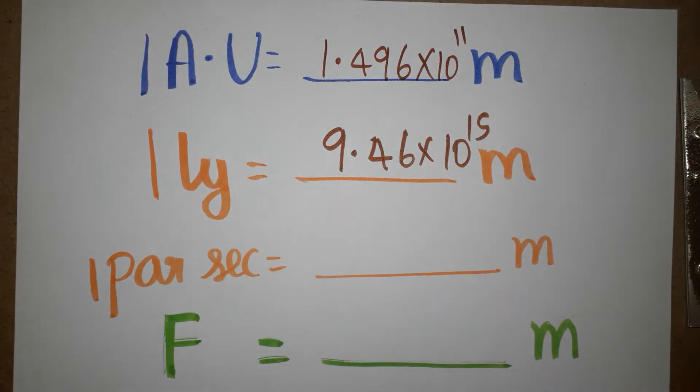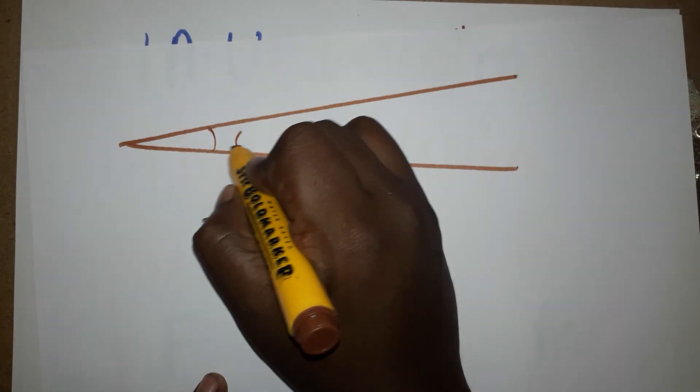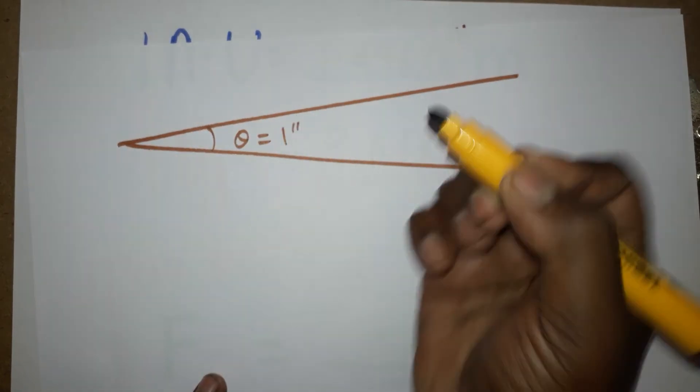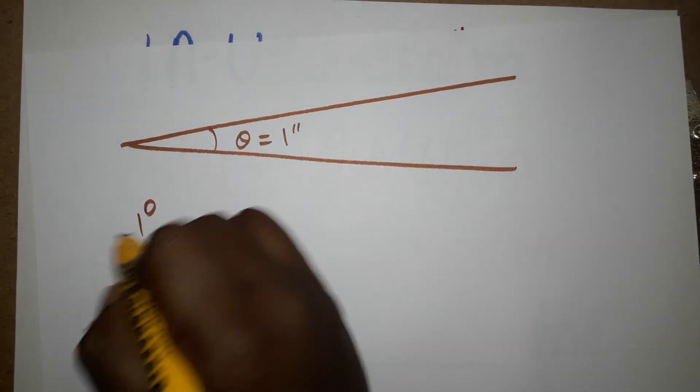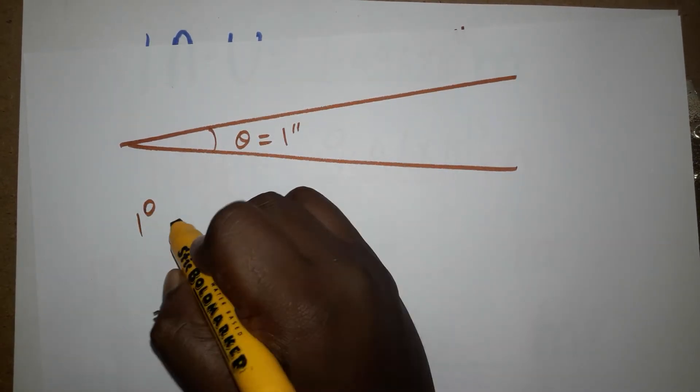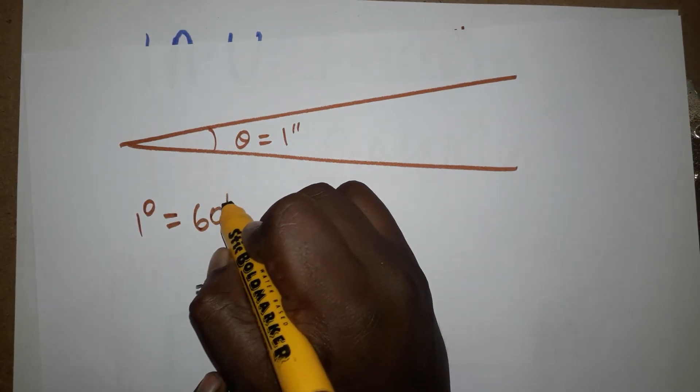Another thing is one parsec. One parsec is going to be a representation in an angle. So one parsec, the angle theta is going to be one second. We know already degree, so one full circle is going to be 360 degrees. One degree have 60 minutes.